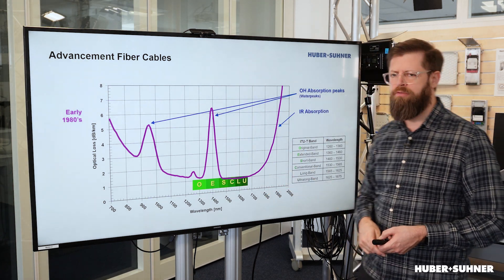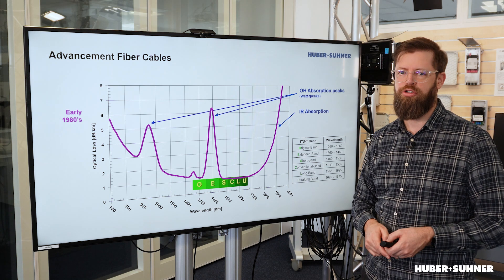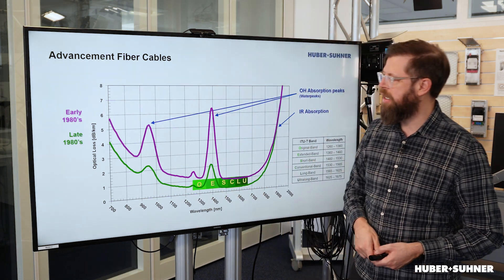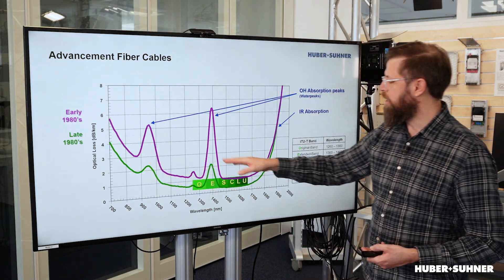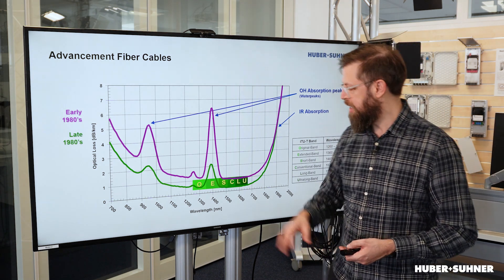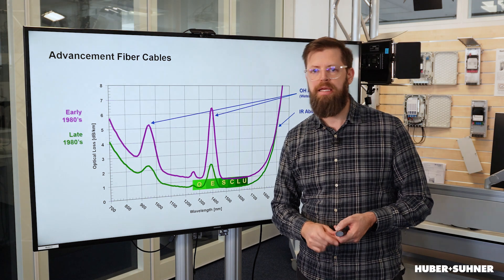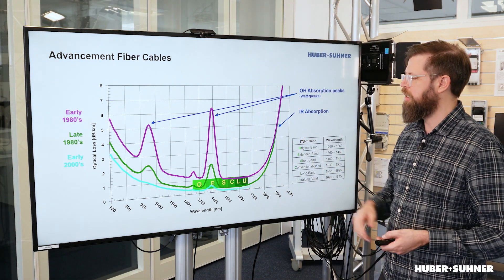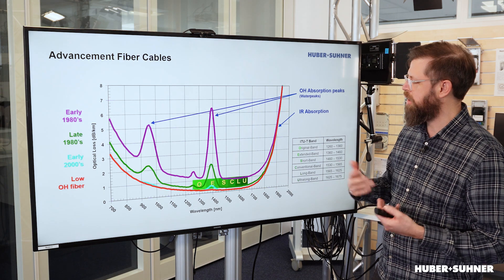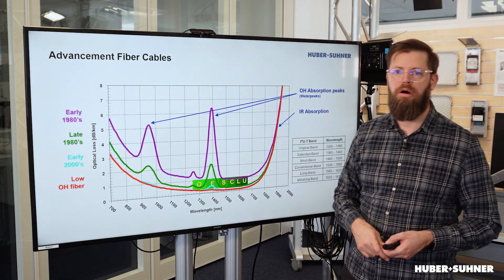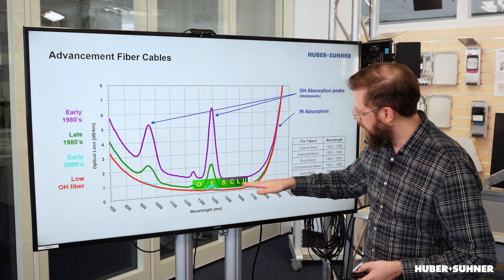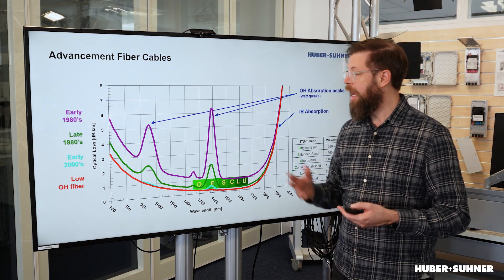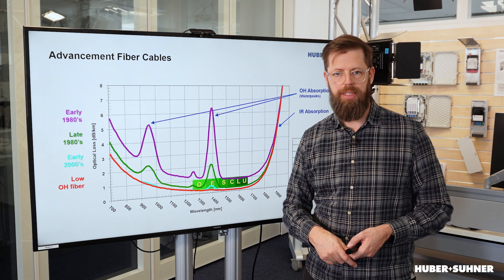Over here we also have the infrared absorption, but we can ignore that because it's outside of our transport window. Technology advanced, and even looking at a fiber cable from the late 80s, those water peaks are much smaller — in fact, up to 4 dB per kilometer less absorption. The technology continued to evolve, and nowadays we have low-hydroxide fiber cables where, as you can see, the attenuation in that transport window is extremely low, and we no longer have those water peaks.